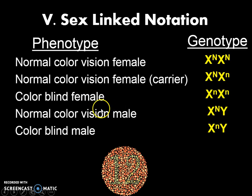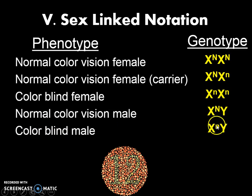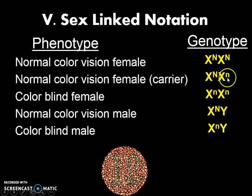A normal color vision male is X^N Y, where big N is normal and Y is the other chromosome. Can he be homozygous or heterozygous? No, he can't, because he only has one X. So the colorblind male has the abnormal little n on his X. There's no way a male can be a carrier. So who gets these sex-linked conditions more often? Males — because females can be carriers, and carriers hide the abnormal allele and don't actually show the problem, though they may pass it on to offspring.